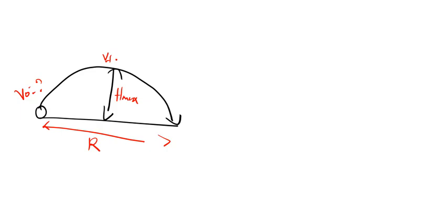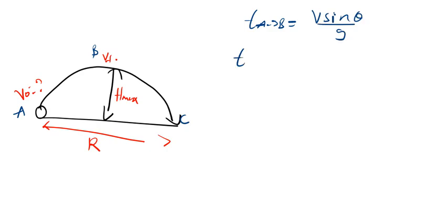The formula we use to find the time: we have point A, point B, point C. If they ask you to find the time it reached point B — the time from A to B — it is given by V sin θ divided by G. If you're finding the time from A all the way to C, they'll say 'time of flight' or 'find the time the ball took to reach the ground.' That is A to C, and the formula is 2V sin θ divided by G.